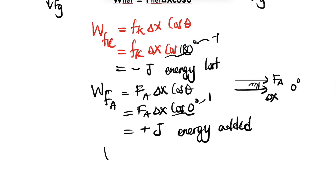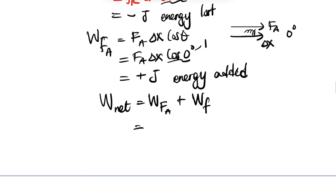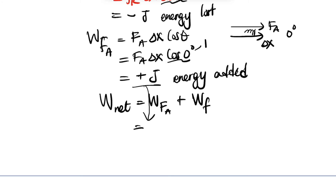Now for the net work done: it's the sum of the work done by all forces. We add the work done by the applied force plus the work done by friction. We do not re-apply signs here because work is a scalar, not a vector — it doesn't have a direction. We substitute whatever values we obtained and add them to get the net work.